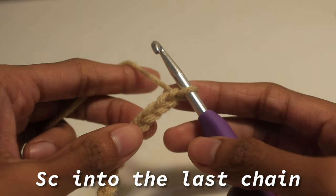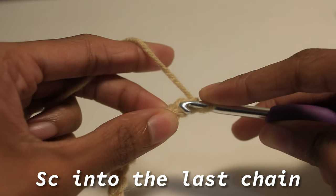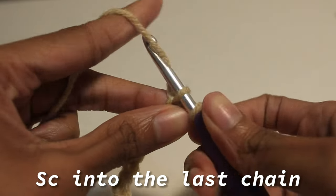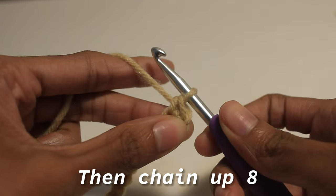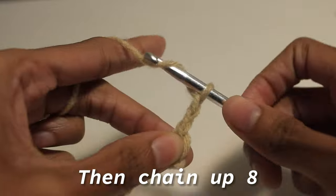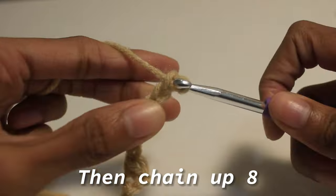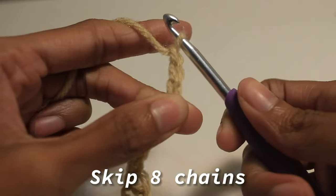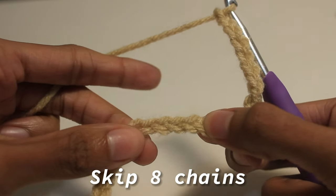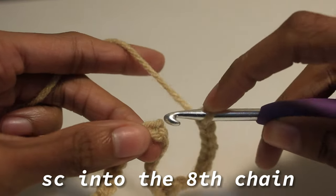Once you're done, single crochet into the last chain. Then chain up eight. After that, skip eight chains and put a single crochet into the eighth chain.